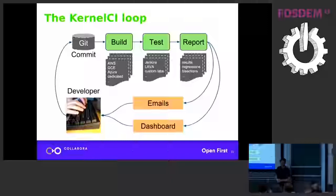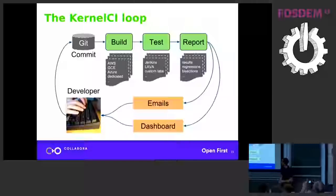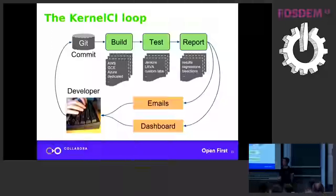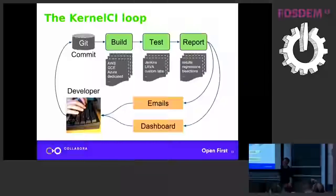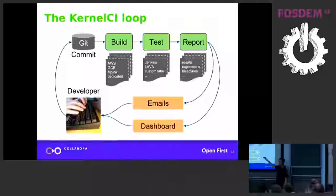Results are stored in a database, and there's processing done to detect regressions. If something worked on one kernel revision and failed in the next revision on the same branch, that's detected. We also have automated boot bisection - if a board booted and then doesn't boot, a bisection run starts. If it succeeds, it sends an email with the commit it found and details. We're starting to add this for all kinds of tests, not just boot tests. You get emails telling you what built, what booted, what failed, regressions, and bisection results.